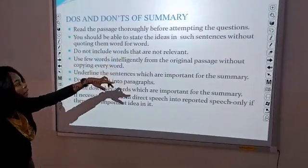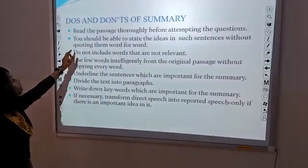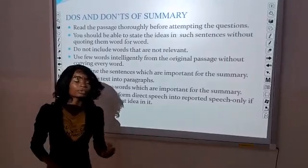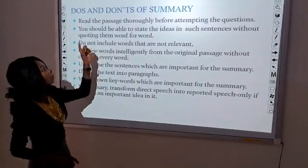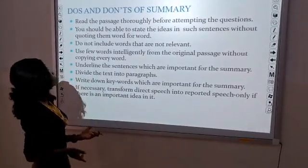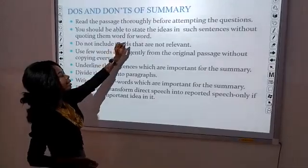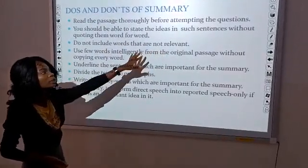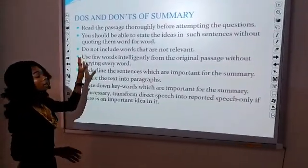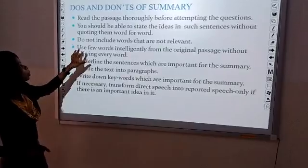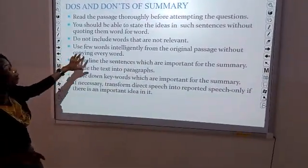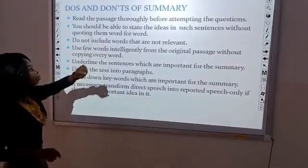Secondly, you should be able to state the ideas in your own sentences without quoting them word for word. That's why it is good you are familiar with your vocabulary. When you want to summarize a writer's idea, use your own words. Do not include words that are not relevant — in summary writing, it is not necessary. Don't start telling stories; go straight to the point. Use few words intelligently from the original passage without copying every word, just like points.